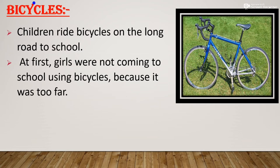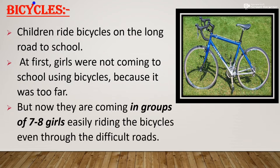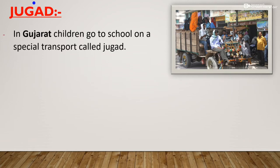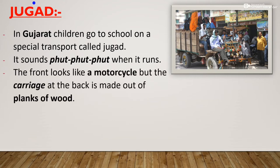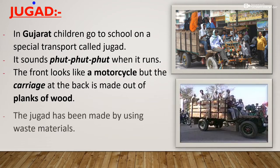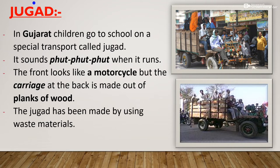Children also use bicycles to reach school. Children ride bicycles on long roads to school. At first girls were not coming to school on bicycles, but now they come by making groups of seven to eight girls. In Gujarat, children go to school on a special transport called jugad. It sounds 'foot foot foot' when it runs. The front looks like a motorcycle but the carriage at the back is made out of planks of wood.